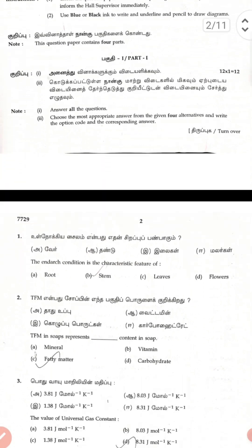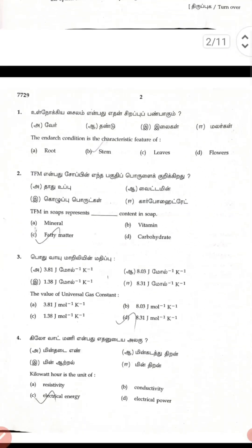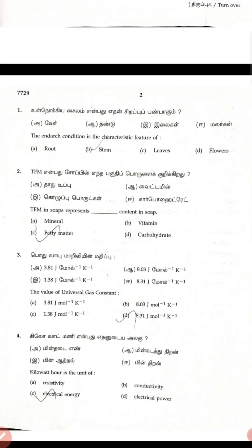The first question answer is B. The second is the Entries Condition of the Cassidy Cap. The third is Entries Stem, Patty Metac. The gas constant is 8.31 J mol⁻¹ K⁻¹. The fourth answer is Electrical Energy.